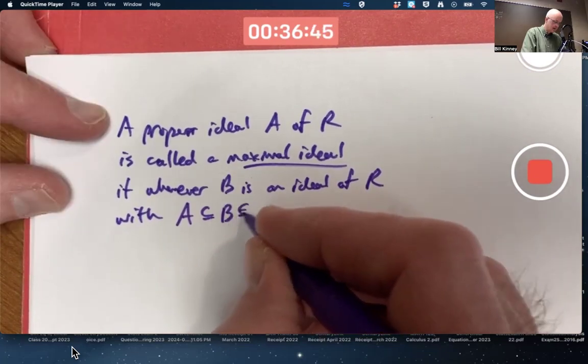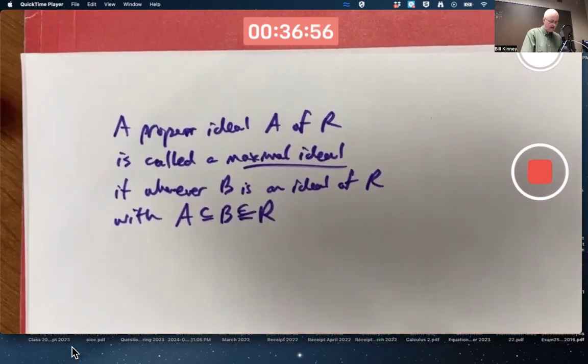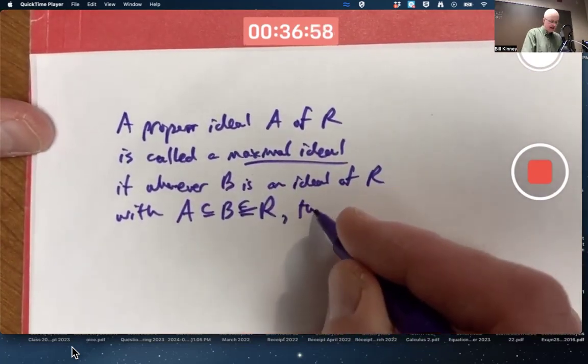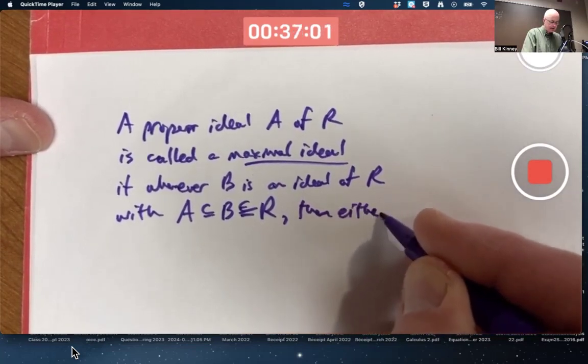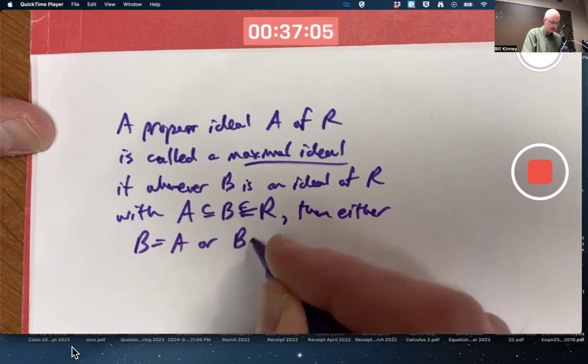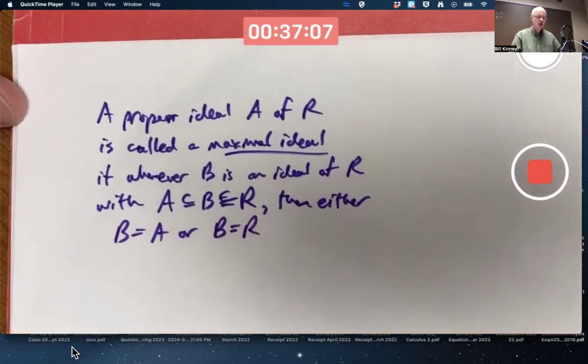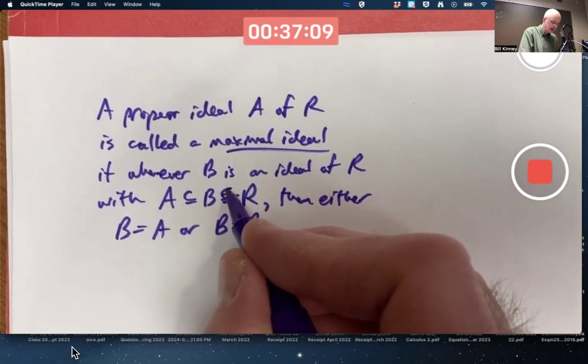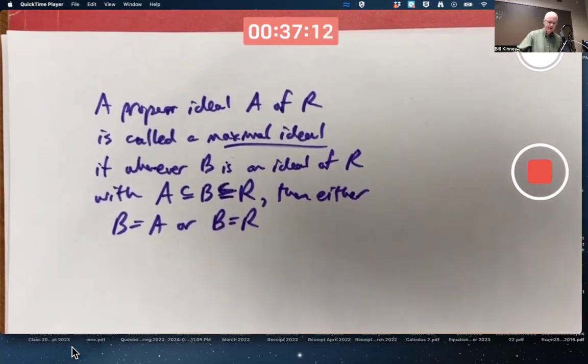Then you can say either B equals A or B equals R. Effectively, there's no ideal in between A and R is an intuitive way to think about that.